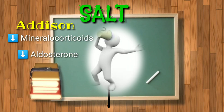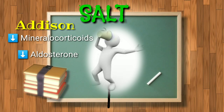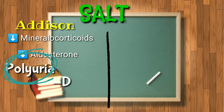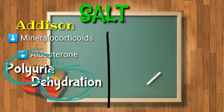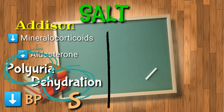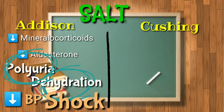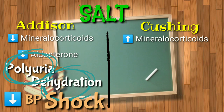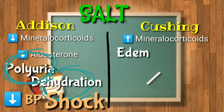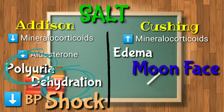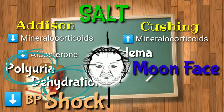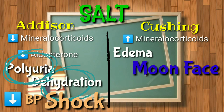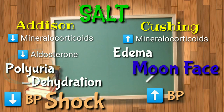If your body doesn't reabsorb enough water, you'll always be urinating — that's why one manifestation in Addison's is polyuria, which also leads to dehydration. Because of that, blood pressure will be decreased, which can lead to possible shock. While in Cushing's disease, there is increased mineralocorticoids, leading to increased sodium and water reabsorption. Your body will develop edema, and there is the occurrence of moon face, which is the hallmark sign of Cushing's disease. Also, because of increased mineralocorticoids, blood pressure will also be increased — the opposite of Addison's disease.